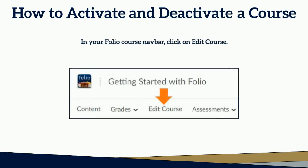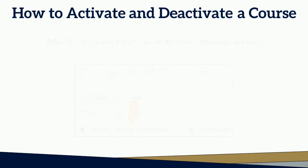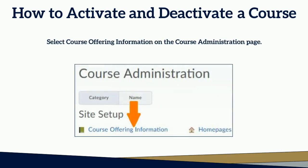In your Folio course navbar, click on Edit Course. Select Course Offering Information on the course administration page.